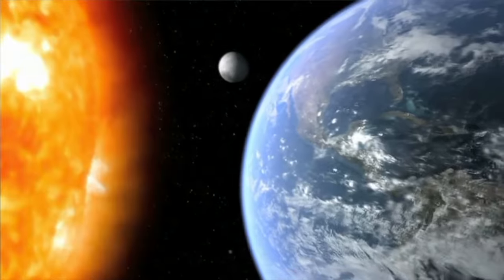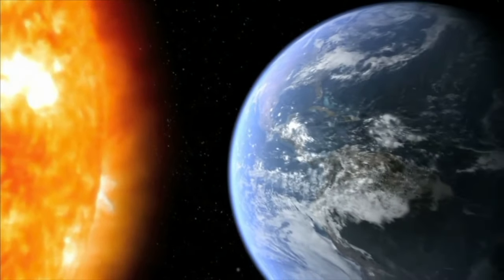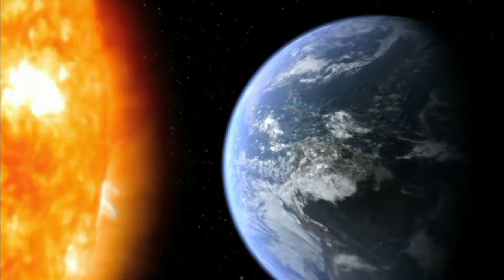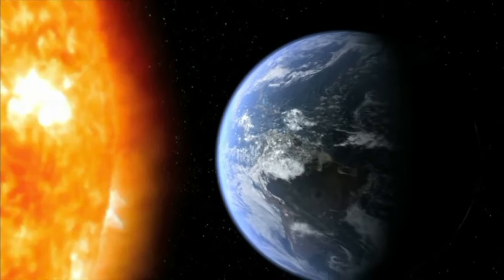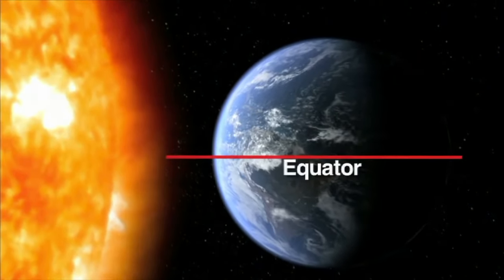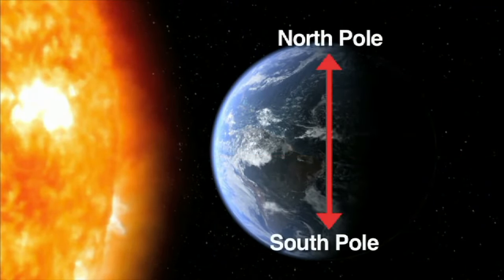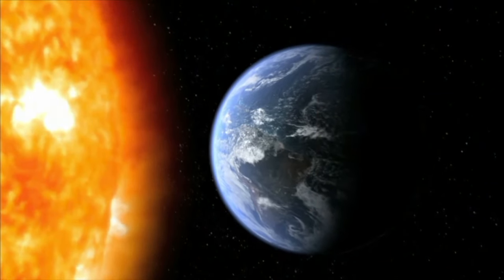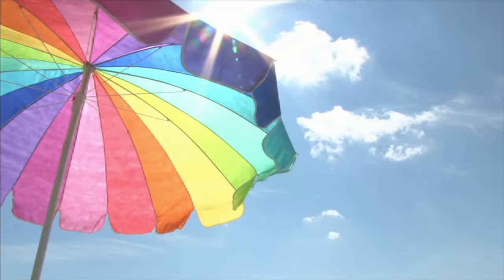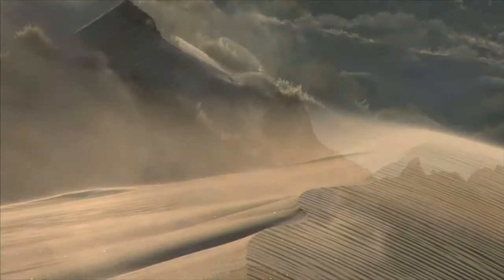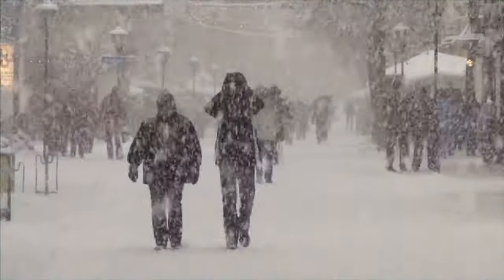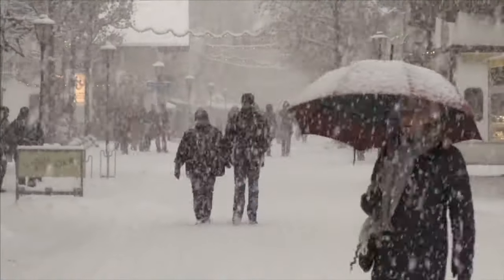Energy from the sun affects the weather. Weather happens when different parts of the Earth get different amounts of heat from the sun. The equator, or the middle of Earth, gets the most direct sunlight, while the north and south poles get the least direct sunlight. This creates differences in the temperature, air pressure, wind, humidity, and precipitation, causing weather on Earth.